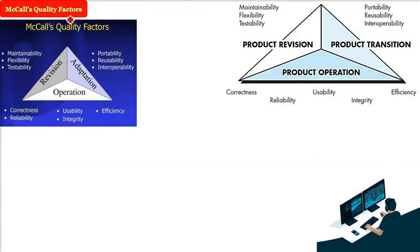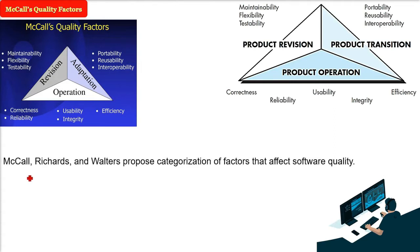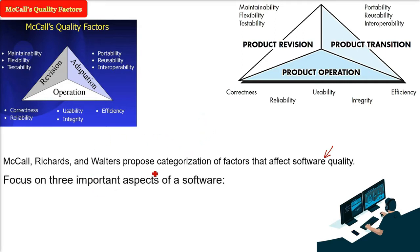McCall's Quality Factors. McCall, his colleagues Richards and Walters, proposed a categorization of different factors and attributes that affect software quality. They wanted to define software quality. There are certain factors that are affecting it, and they focused on three very important aspects of a software.